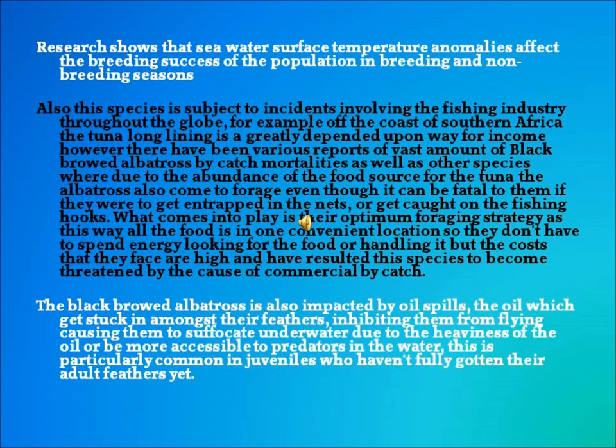Research shows that seawater surface temperature anomalies affect the breeding success of the population in both breeding and non-breeding seasons. In Tasmania, tuna longlining resulted in vast amounts of black-browed albatross bycatch mortalities. This is because the black-browed albatross is impacted by the anthropogenic activity involved in fisheries as they are subject to oil spills.